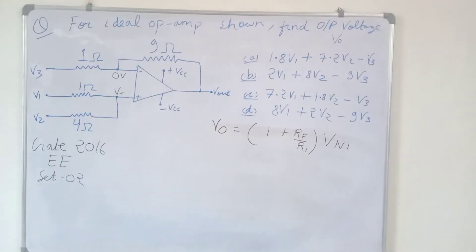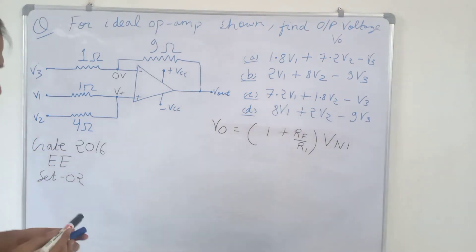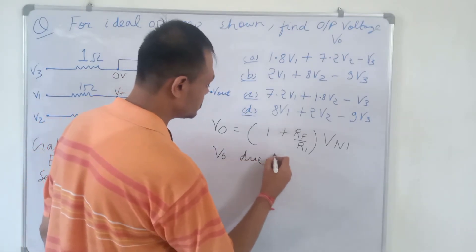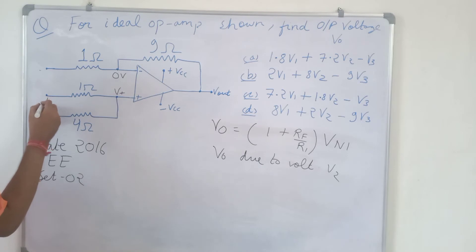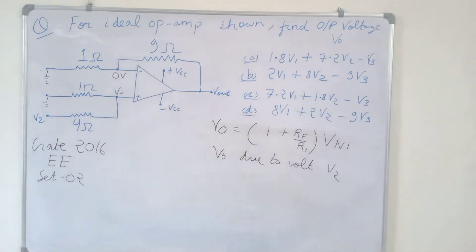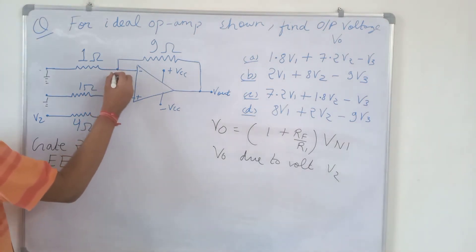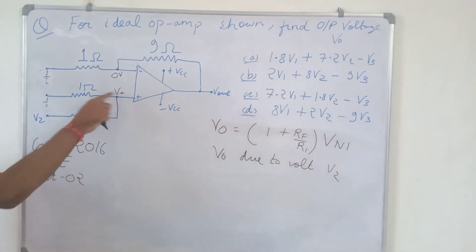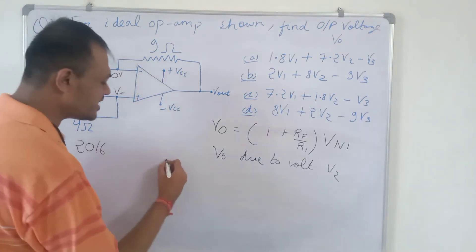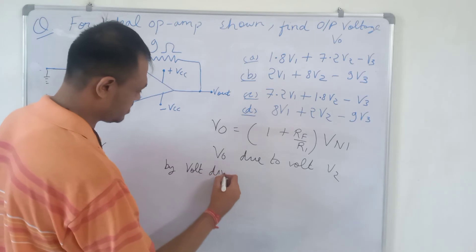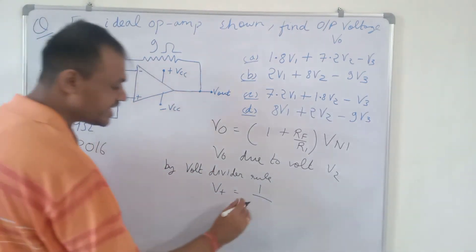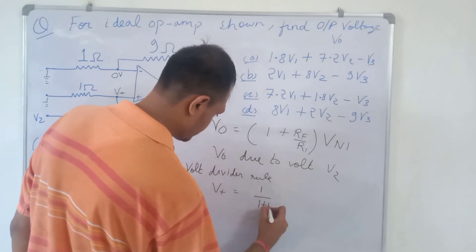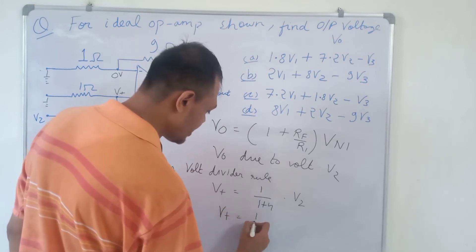The output voltage due to V1 was 8V1. Now we find the output voltage due to V2. For V2 only, we ground V1 and V3 — applying the superposition theorem. By the voltage divider rule, V+ = V2 × 1/(1 + 4) = (1/5)V2.